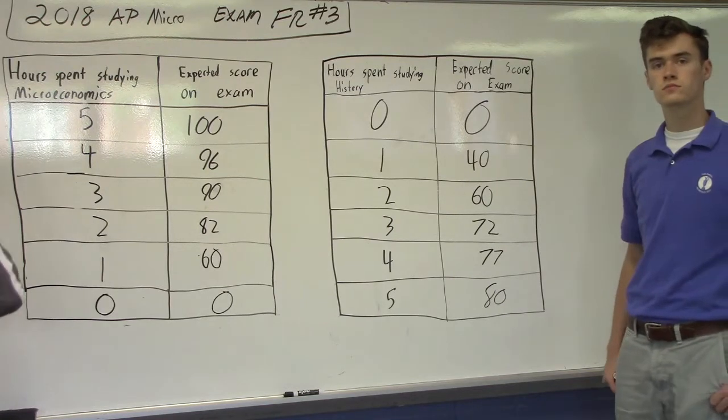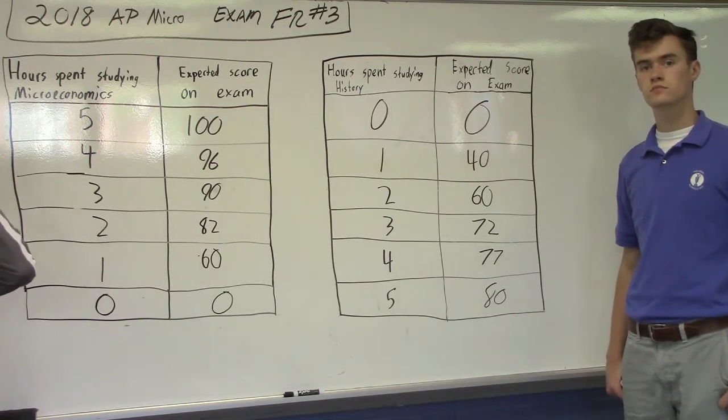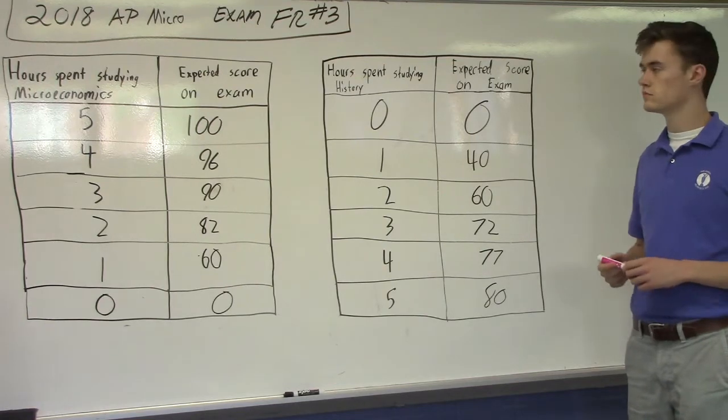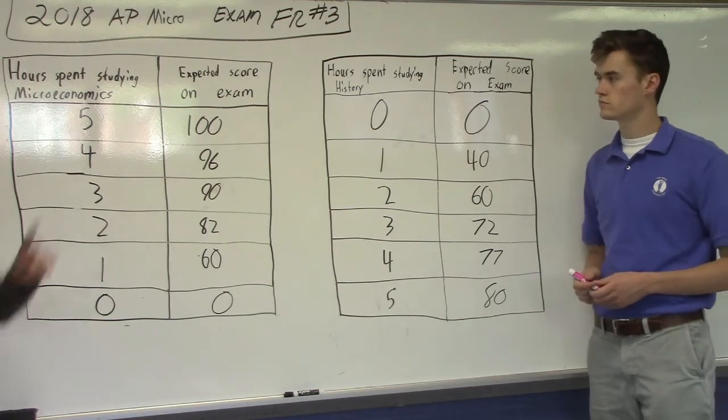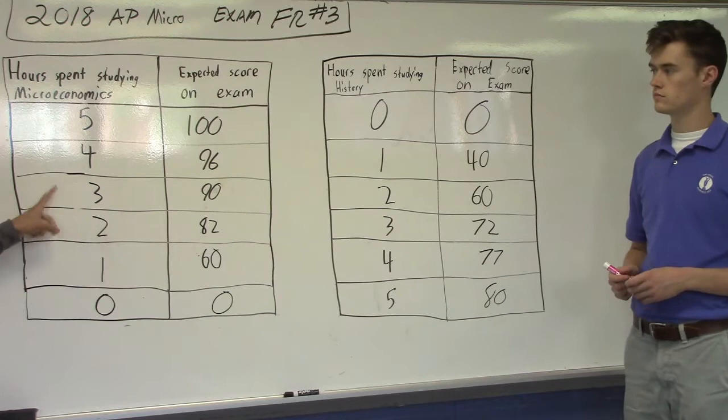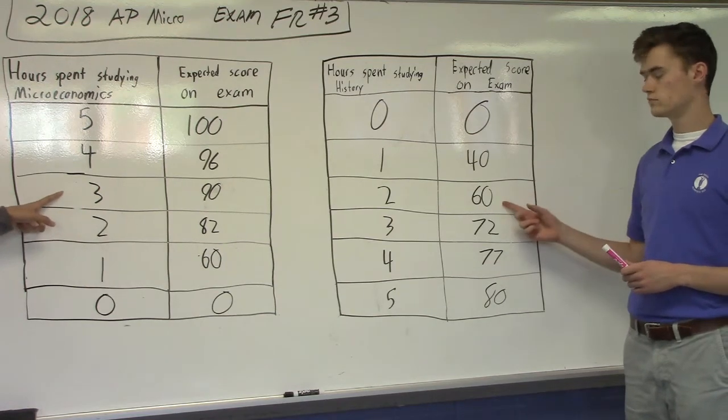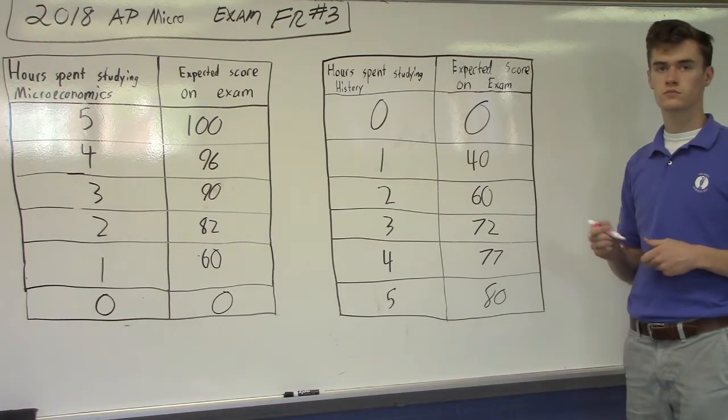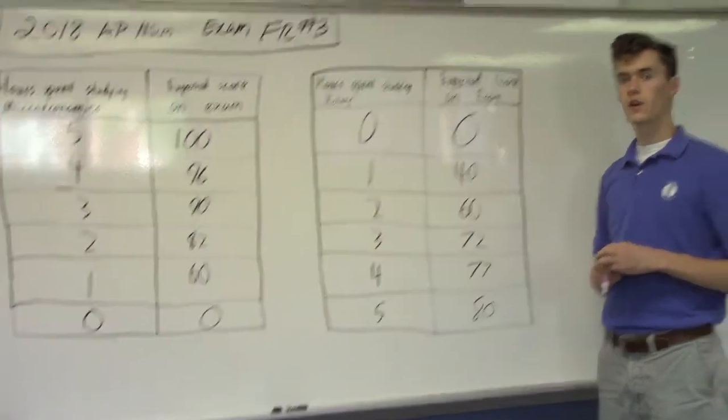Question A, the first of five parts on this short question. Noralia spends three hours studying microeconomics. Could you point to that, Dylan? Three hours studying microeconomics and two hours studying history. Calculate her gain from the second hour spent studying history.